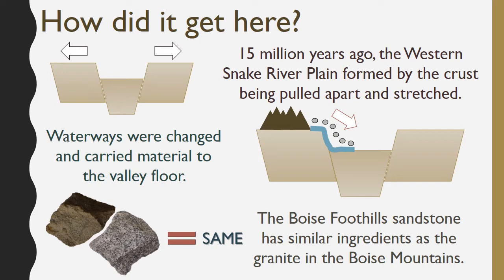Now we know why we have so much sediment in the valley. This sediment was later compacted and cemented — smushed and glued together — to form the sandstone. The Boise foothills sandstone has the same ingredients or composition as the granite we find in the Boise mountains along the north side of the valley, which tells us that the sandstone sediment traveled from the Boise mountains down to the Boise area.